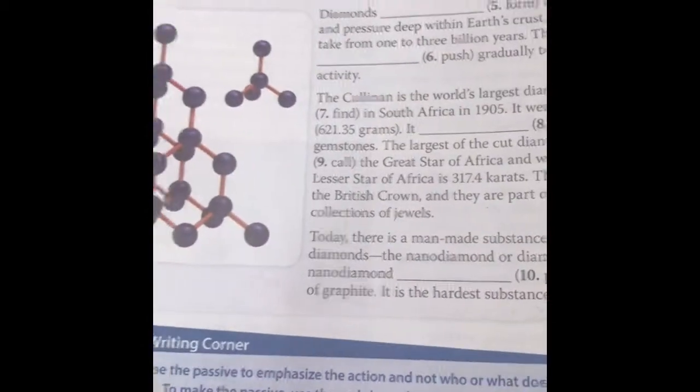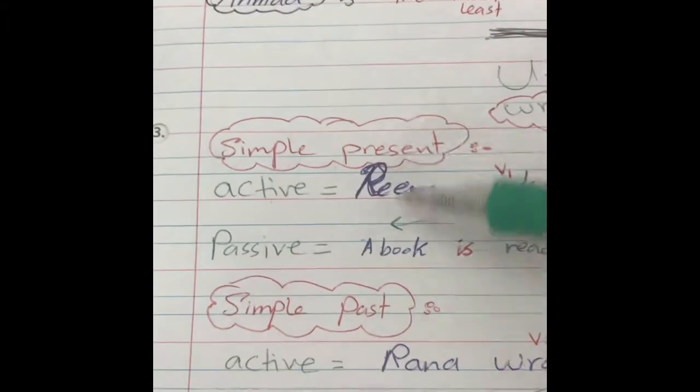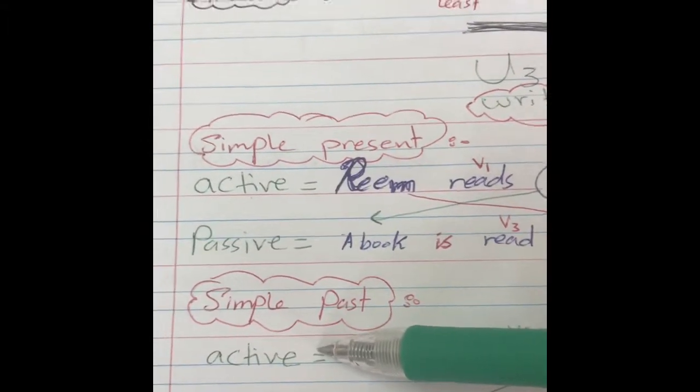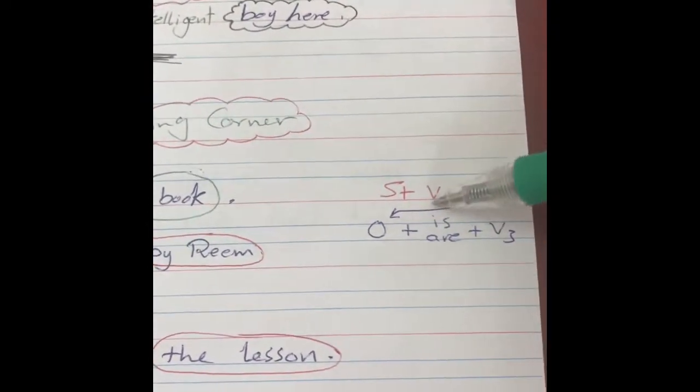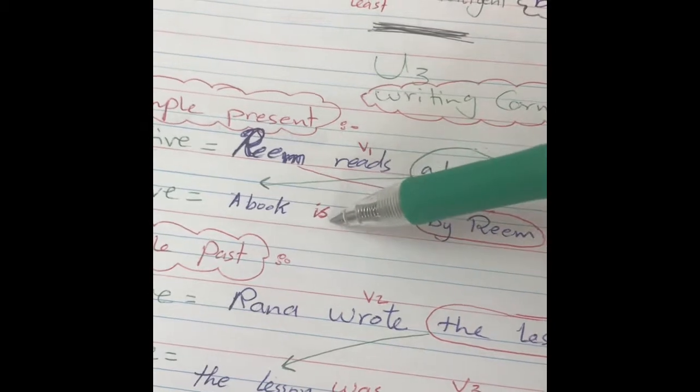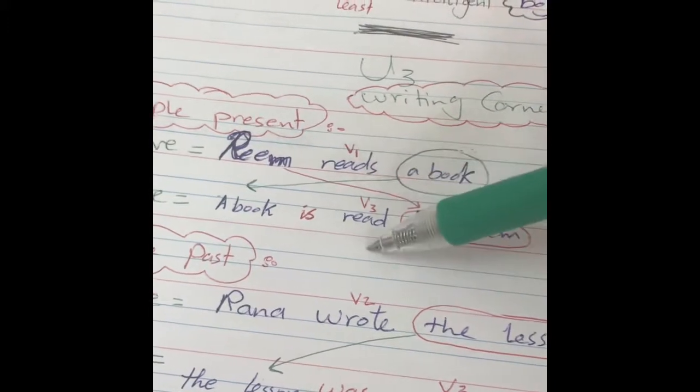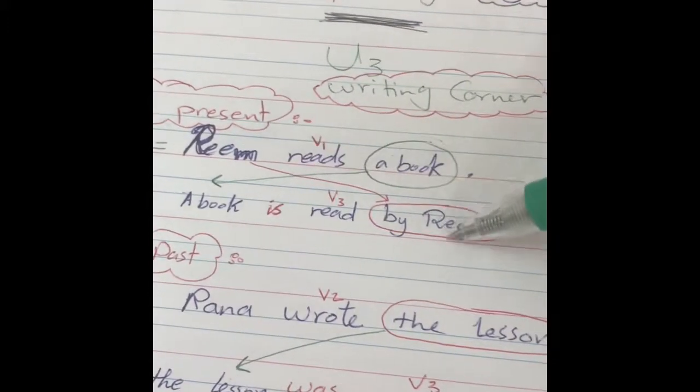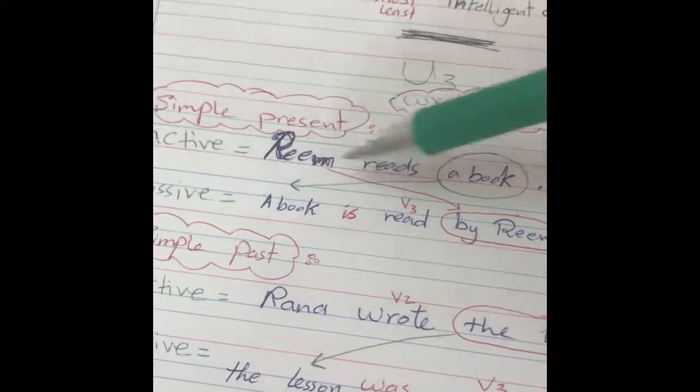Number two in this unit, in writing corner, there's a grammar lesson about active and passive, simple present and simple past. In simple present, for example, Reem reads a book: subject, verb one, object. How does the verb in simple present transform to passive? The object comes in the beginning, then be according to the object, is or are, then verb three. And if I want to say by someone, I can add it or not. Reem reads a book becomes a book is read by Reem.